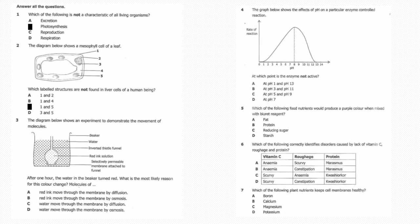Question number three: The diagram below shows an experiment to demonstrate the movement of molecules. After one hour, the water in the beaker turned red. What is the most likely reason for this color change? The answer is A, molecules of red ink move through the membrane by diffusion.